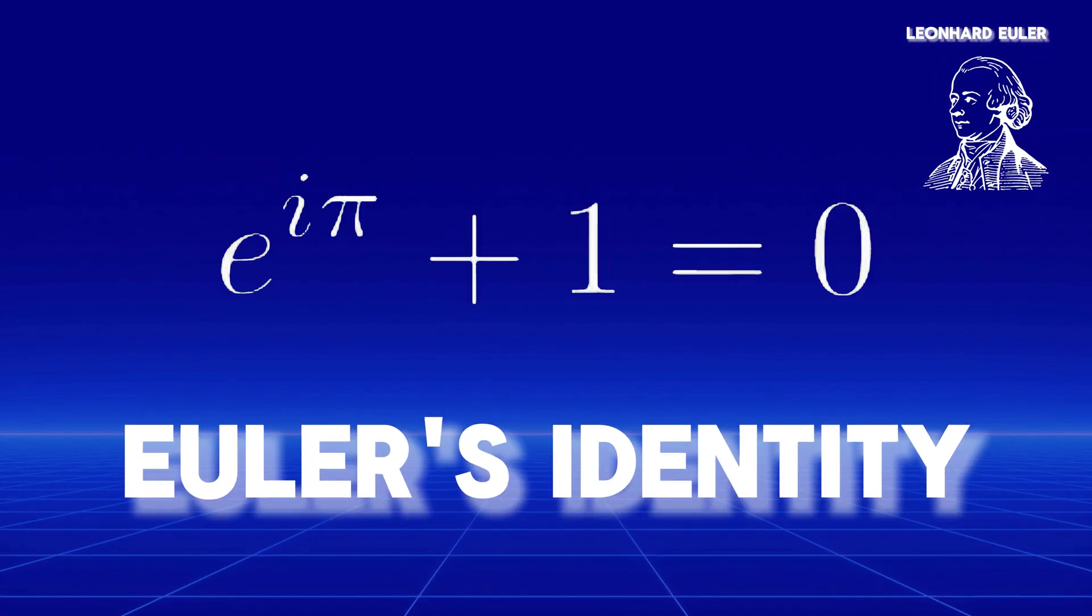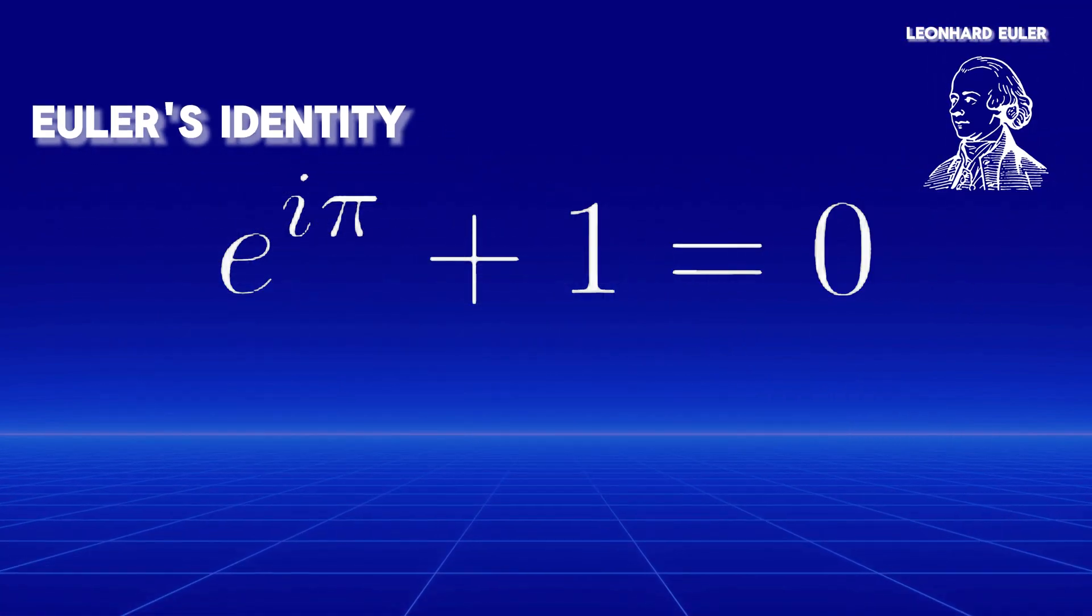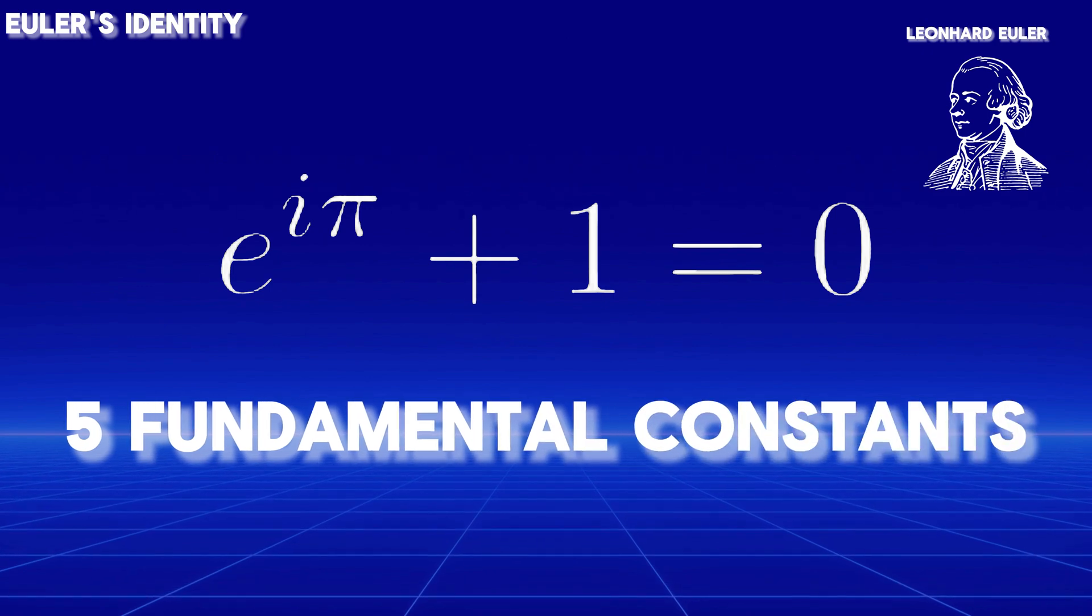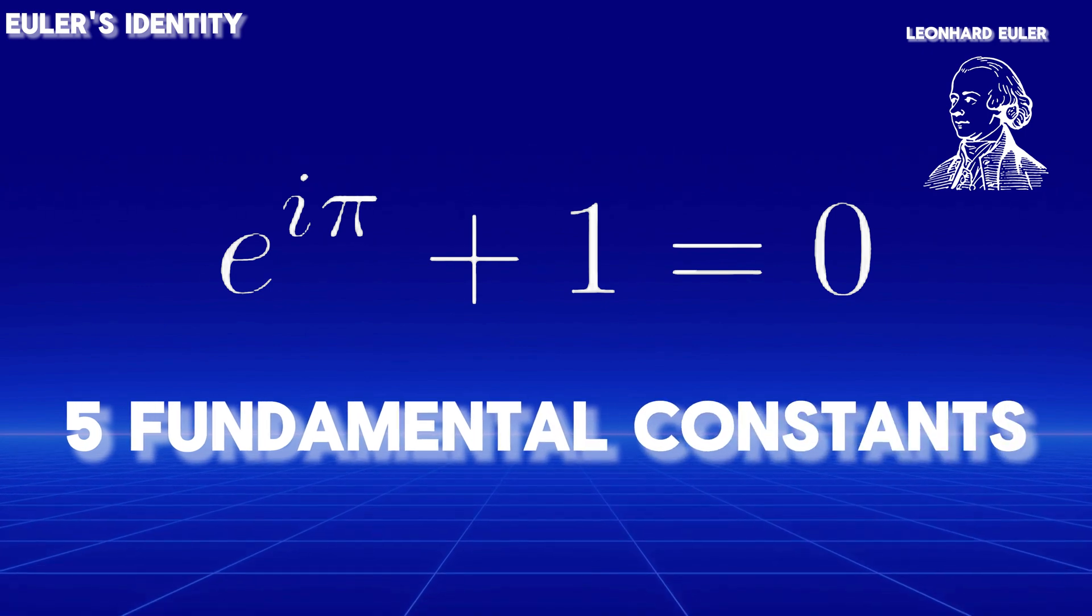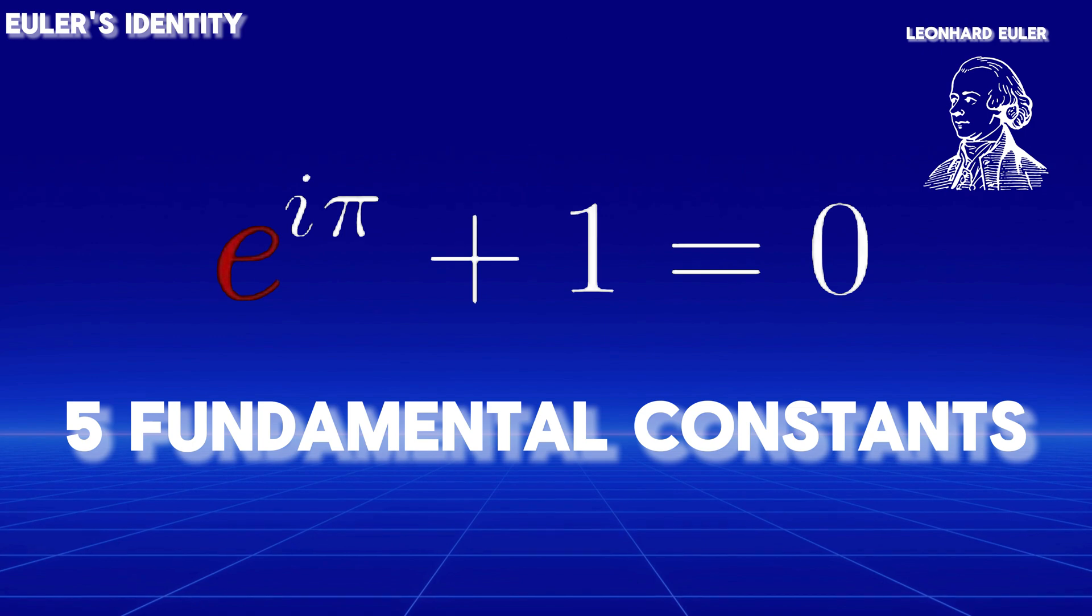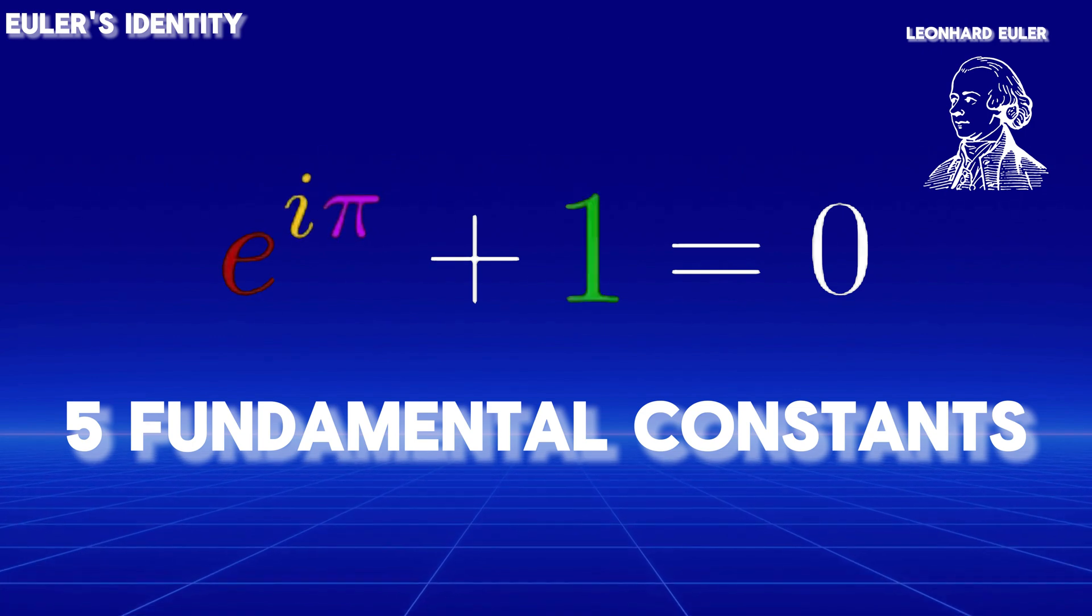Euler's identity. This seemingly simple equation combines five of the most fundamental constants in all of mathematics: E, i, pi, 1, and 0.